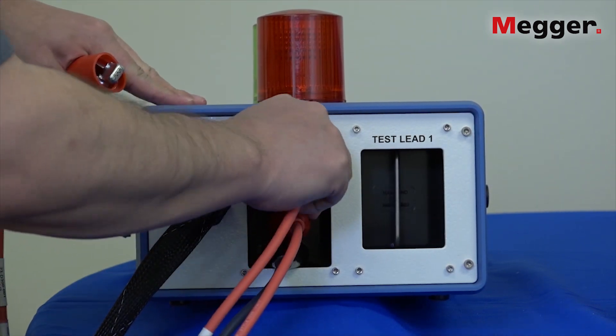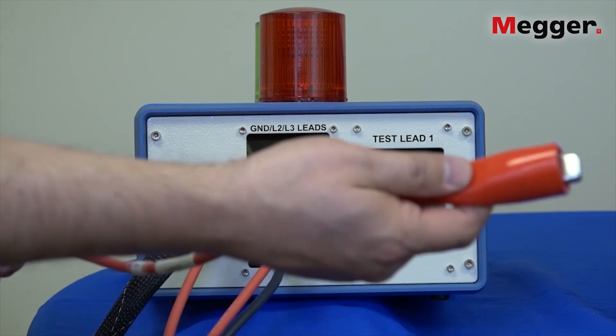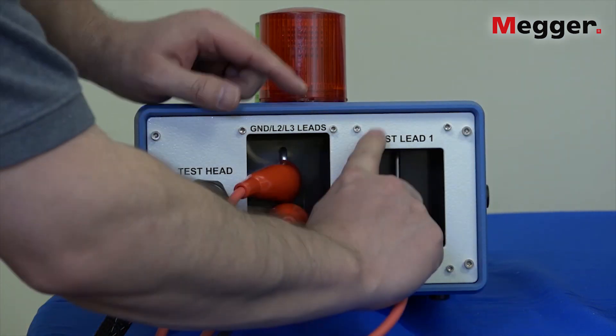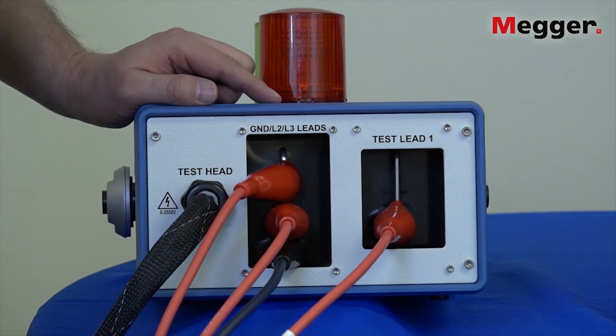Remember your leads are labeled one, two, and three. Then test lead one where the active voltage is going to come through will connect to test lead one bar over here like that.